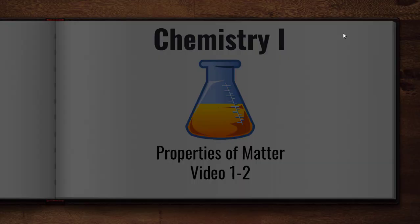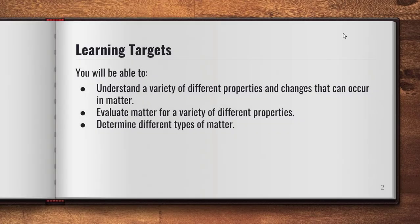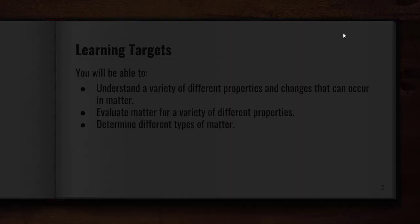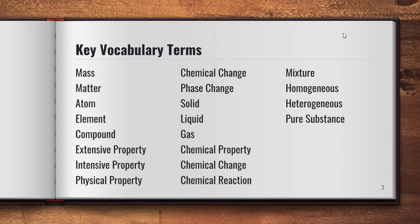Hopefully at the end of this video you'll be able to understand a variety of different properties and changes that can occur in matter, evaluate matter for a variety of different properties, and determine some different types of matter that exist in our world. We have quite a bit of vocabulary terms here and many of these you're probably familiar with from middle school science, so make sure you're good with these. We will cover each of them as we go through the lesson today.